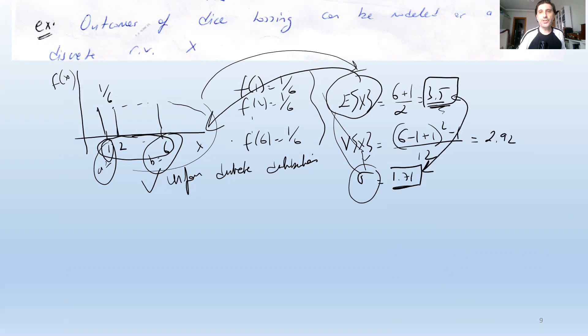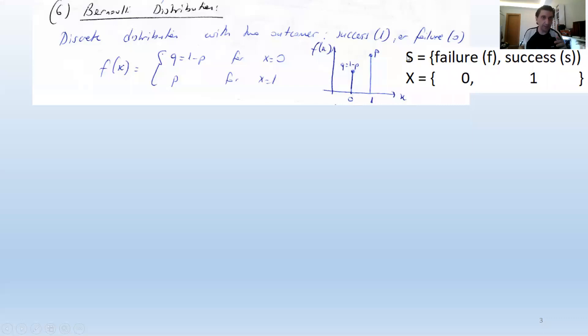The expected value and variance are called the first and second moments of the distribution. We need higher moments to fully describe the whole distribution. The next discrete distribution — one of the most basic, from which almost all discrete distributions are formed — is the Bernoulli distribution.